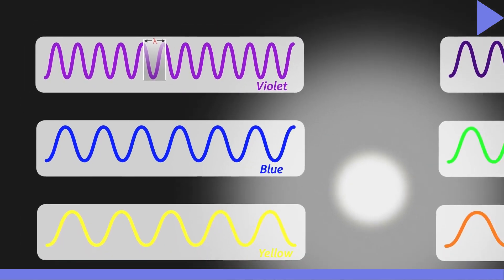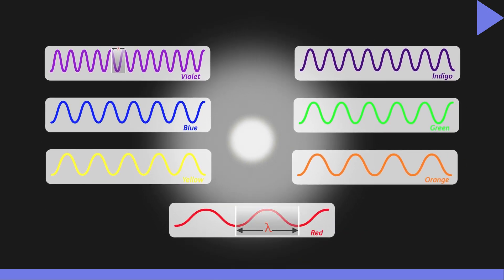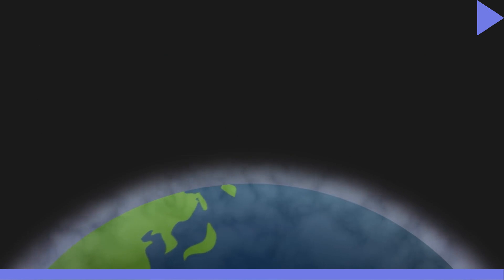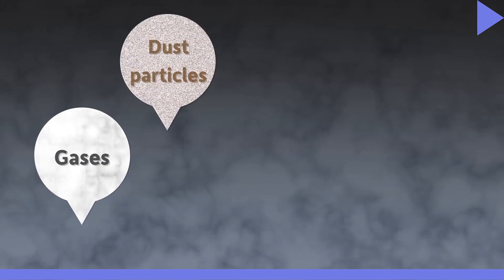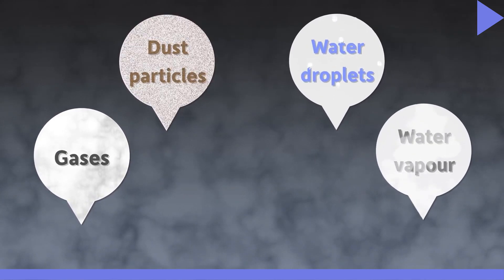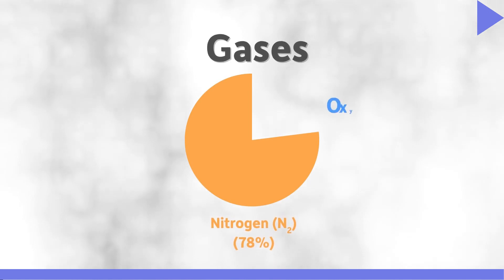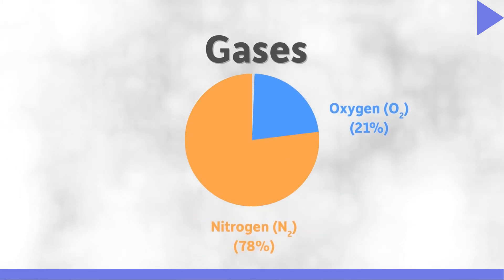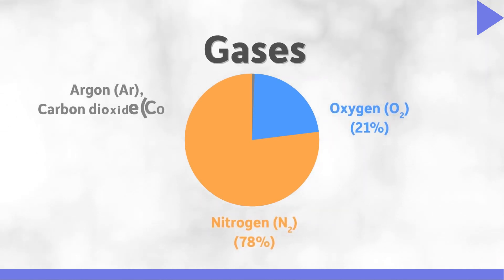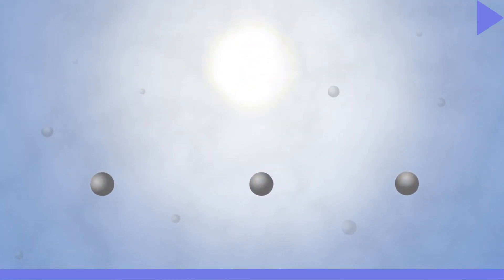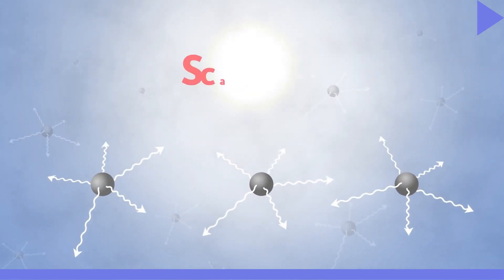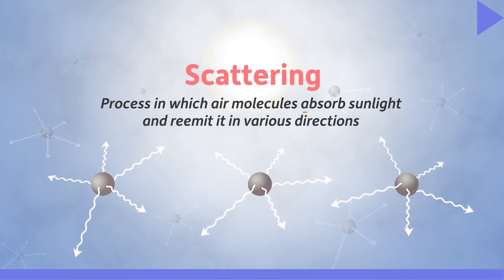The violet coloured light has the shortest wavelength of all, while the red one has the largest wavelength. The earth's atmosphere is mainly composed of gases, dust particles, water droplets and water vapour. Among the gases, nitrogen is present in abundant quantity at around 78%, followed by oxygen at approximately 21%, with the remainder being argon, carbon dioxide and other gases. When sunlight strikes air molecules, it gets scattered — a process in which light is absorbed by atoms and re-emitted back in various directions.